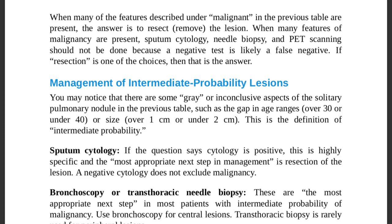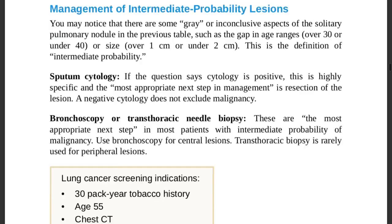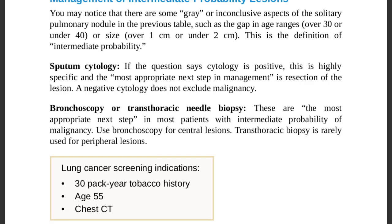For intermediate probability lesions, first perform sputum cytology. If cytology is positive — which is highly specific — the most appropriate next step is resection. A negative cytology does not exclude malignancy; the lesion may still be malignant.